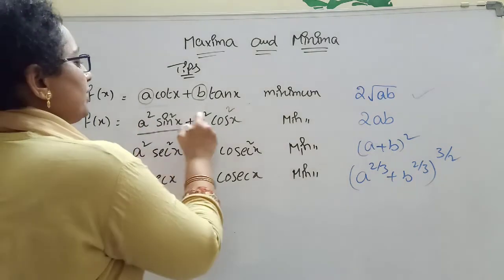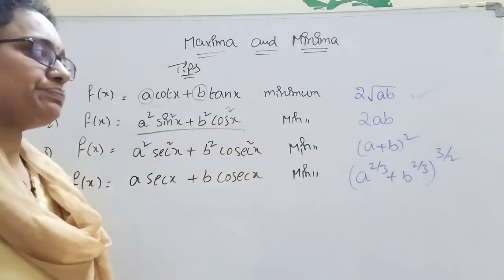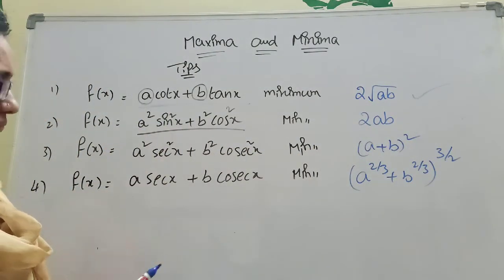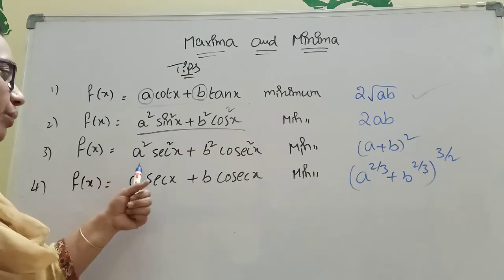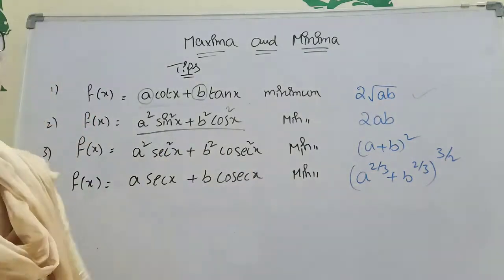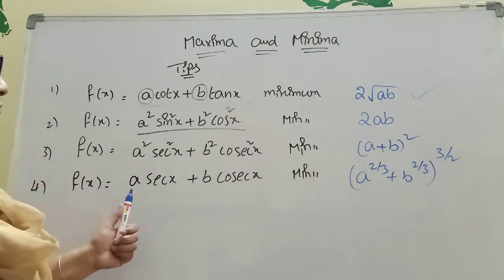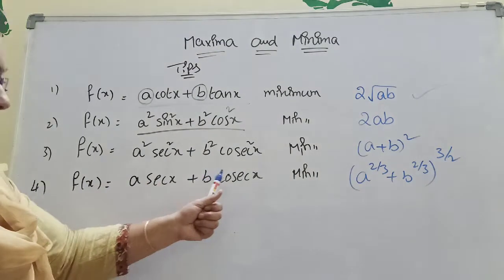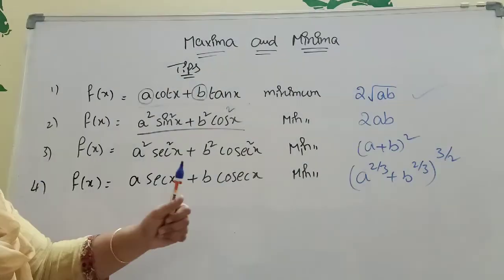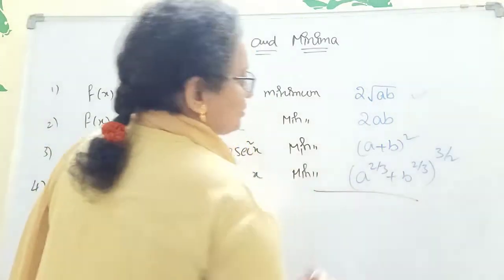Similarly, for A²sin²x + B²cos²x, the minimum value is 2AB. And for A²sec²x + B²cos²x, the minimum value is (A + B)². For f(x) = A·sec(x) + B·cos²(x), the minimum value is (A^(2/3) + B^(2/3))^(3/2). These are the formulas.